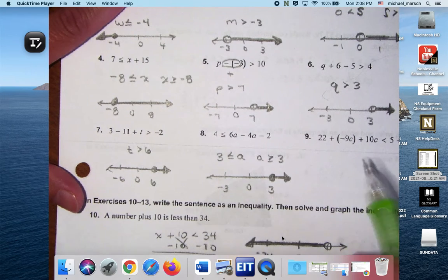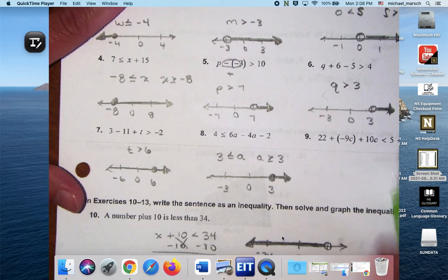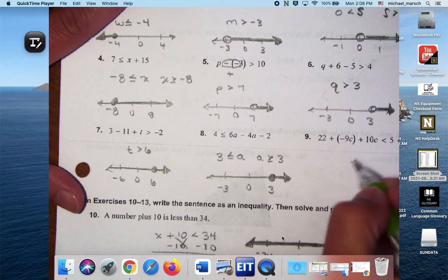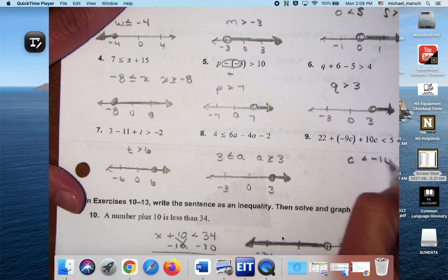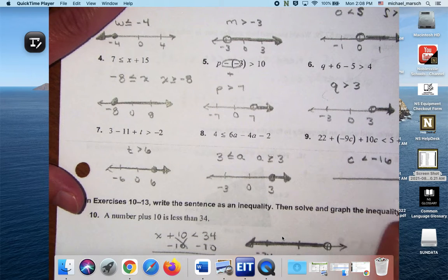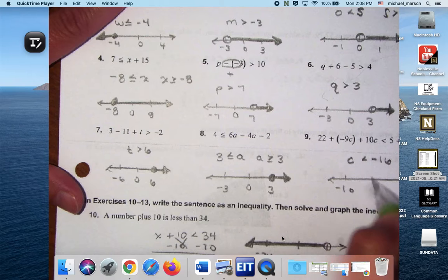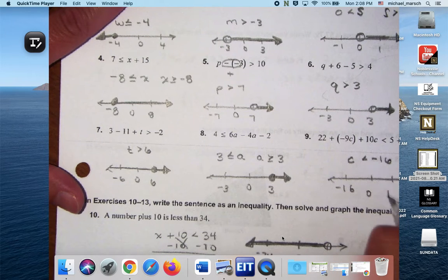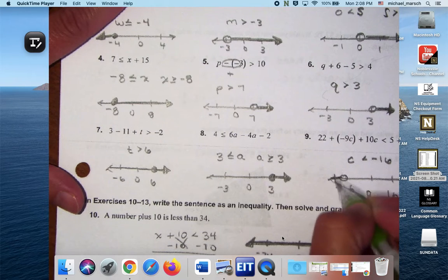And then number 9, we have some like terms over here. We've got some combining of things, but all said and done, you end up with C is less than negative 16. Open circle to the left.